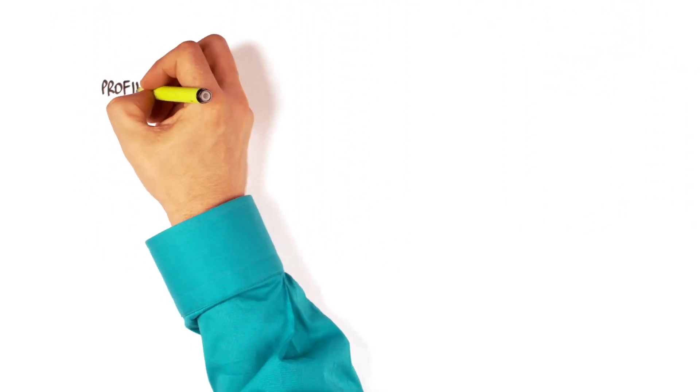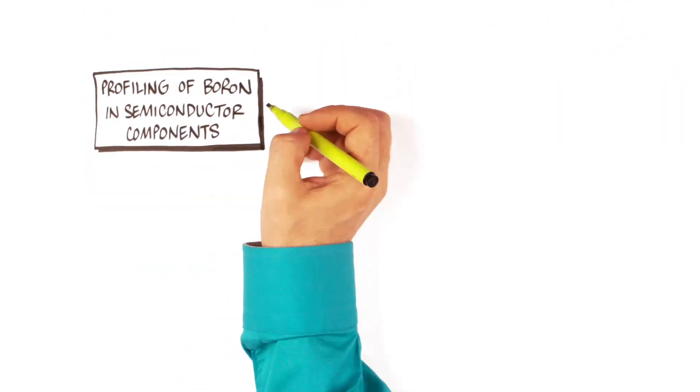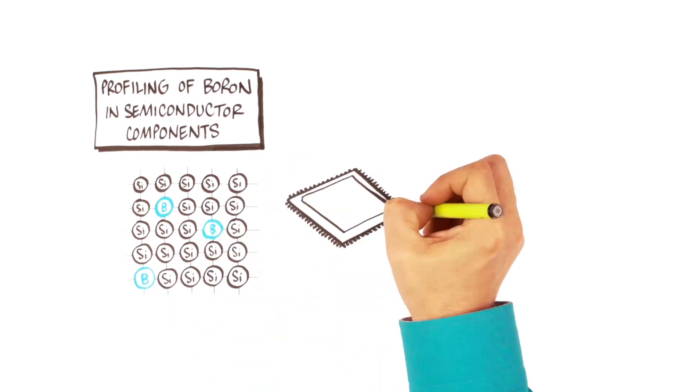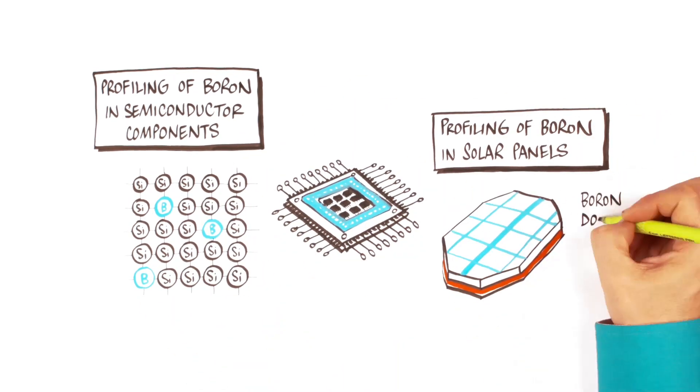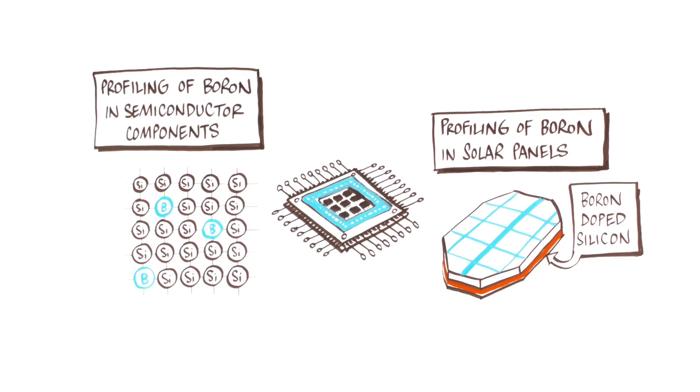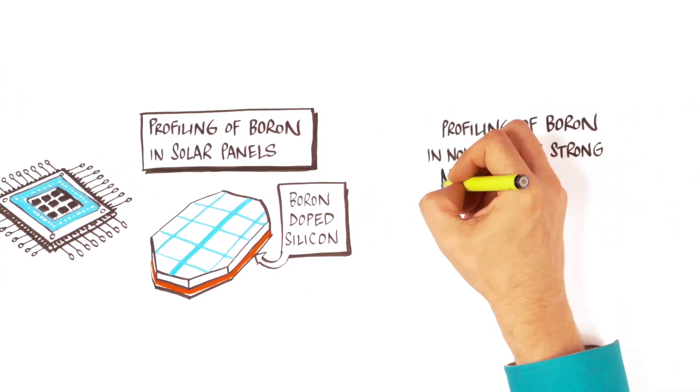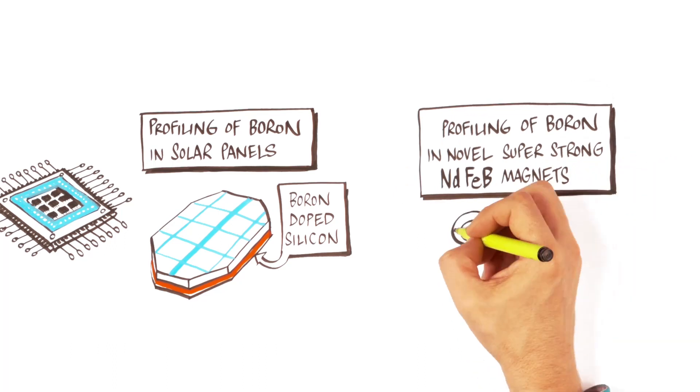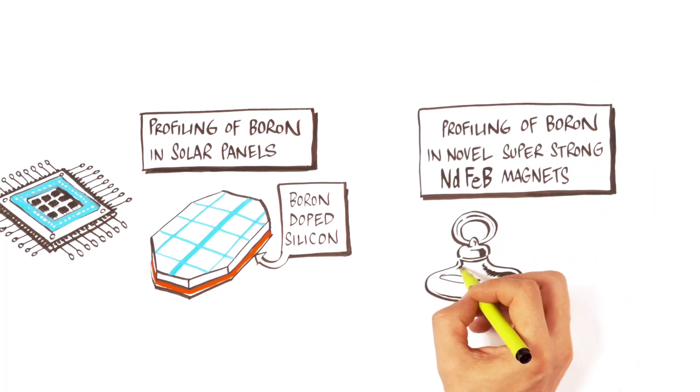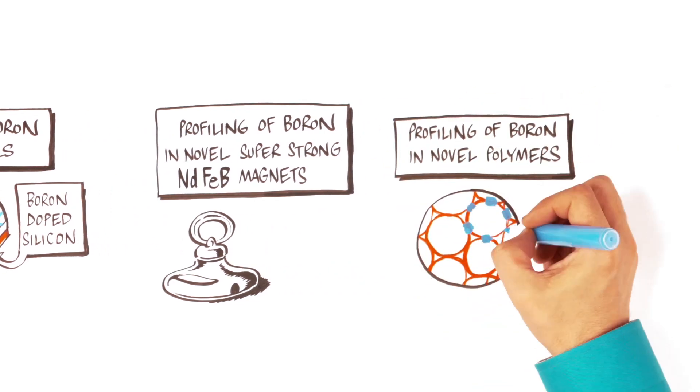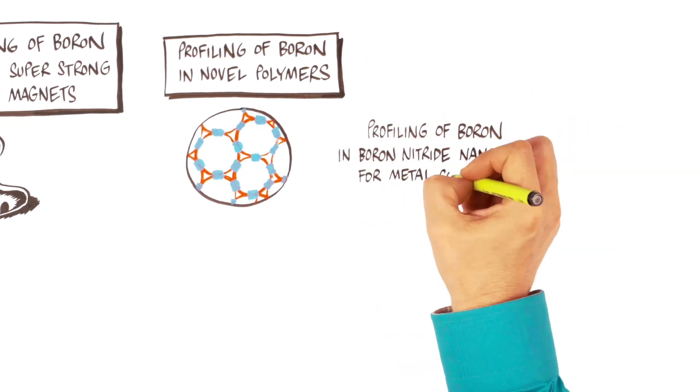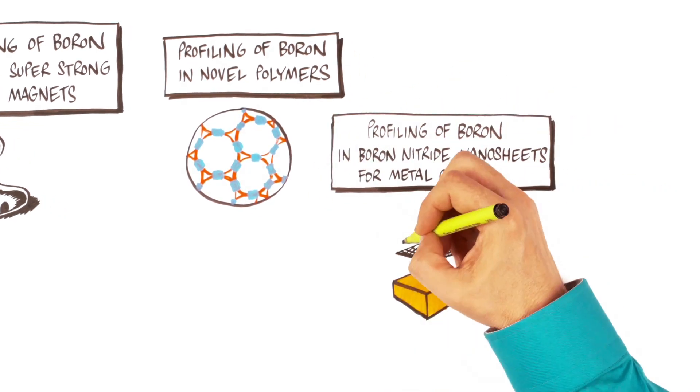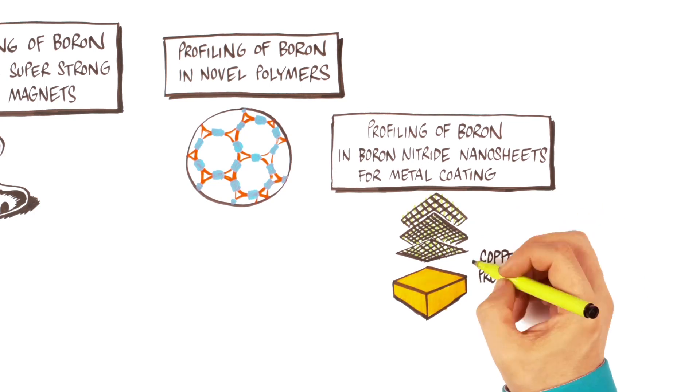For example, in electronics, profiling of boron in semiconductor components. In solar cells, profiling of boron in solar panels. In magnetism, profiling of boron in novel super-strong neodymium magnets. In polymers, profiling of boron in novel polymers. In corrosion protection, profiling of boron in boron nitride nanosheets for metal coating.